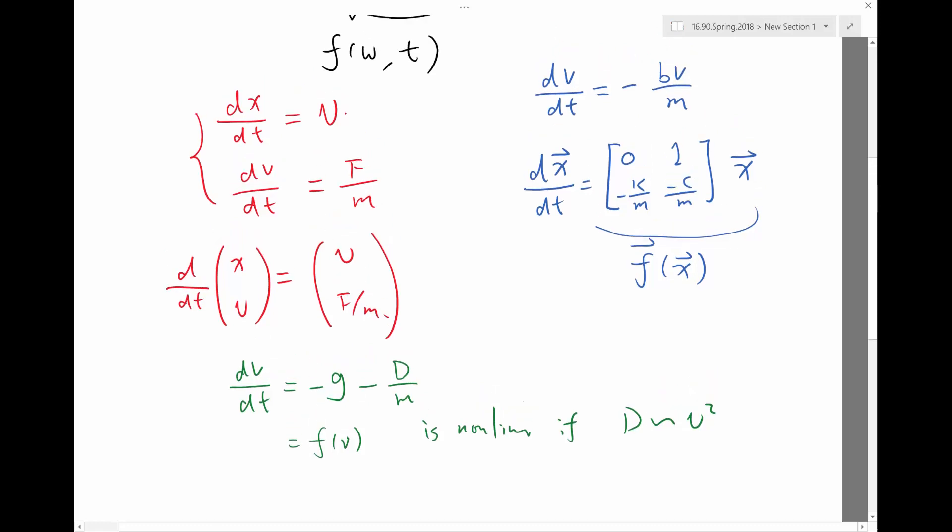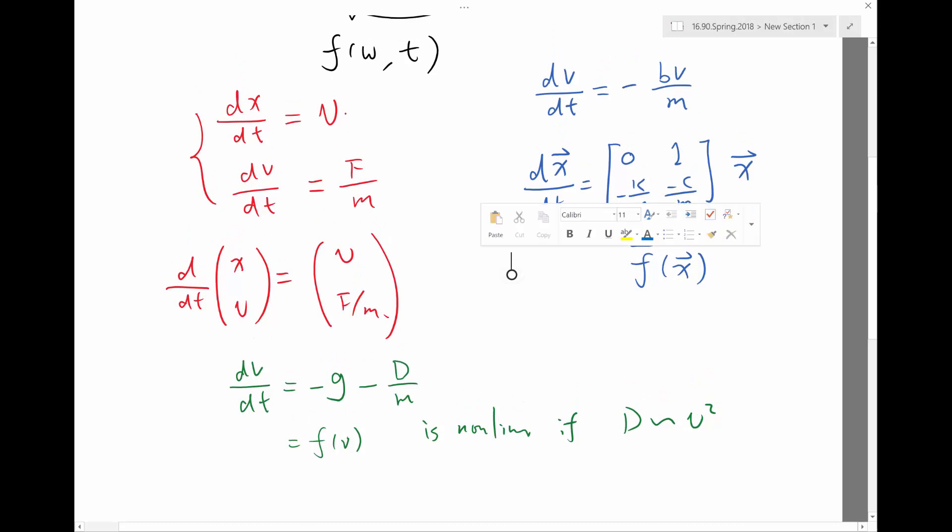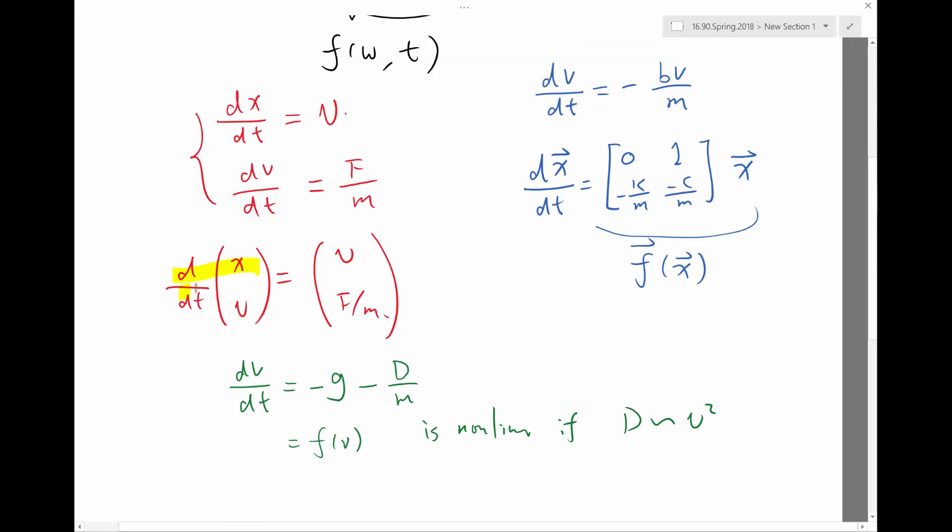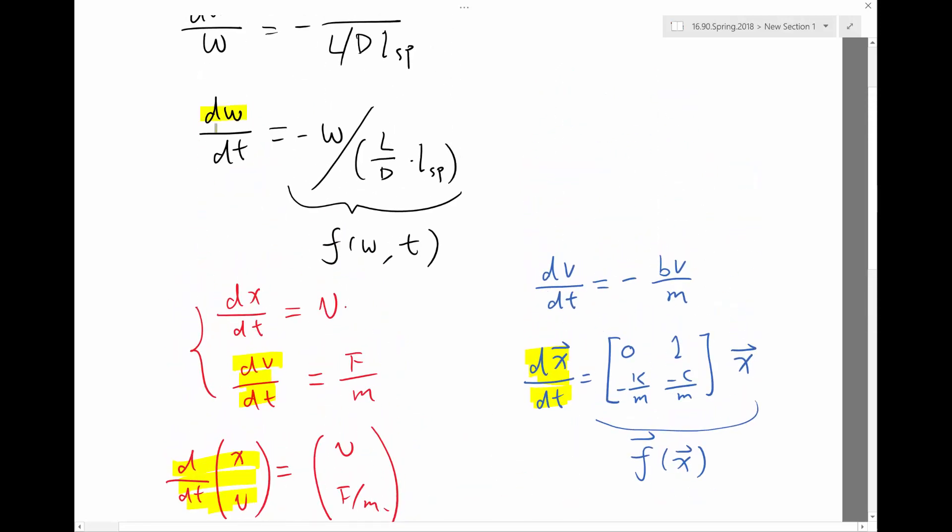And for computers to do it, the critical problem in solving all of these equations is dealing with terms like d dt, dv dt, dx dt, dv dt, dw dt, right? How do you teach a computer how to deal with terms like that?